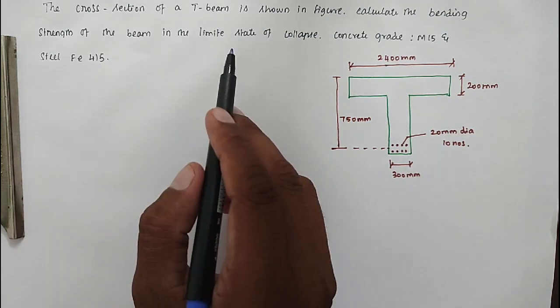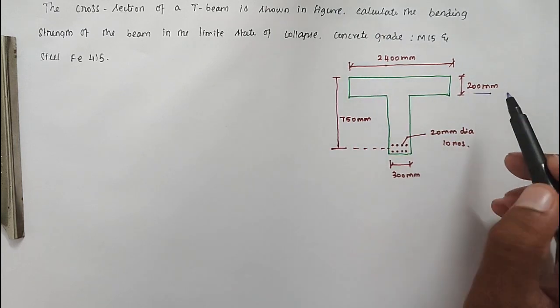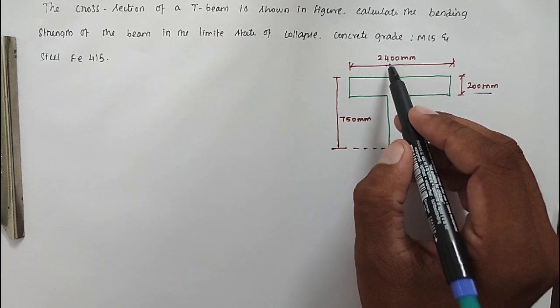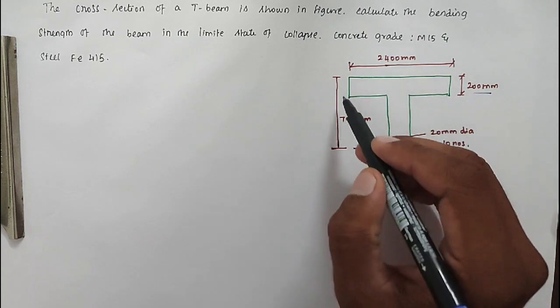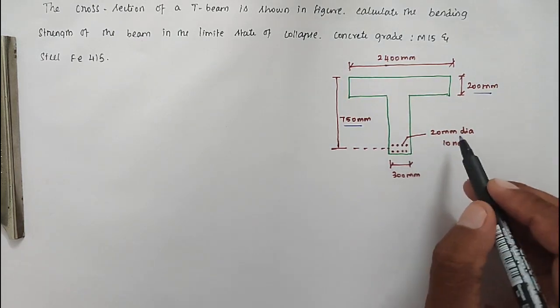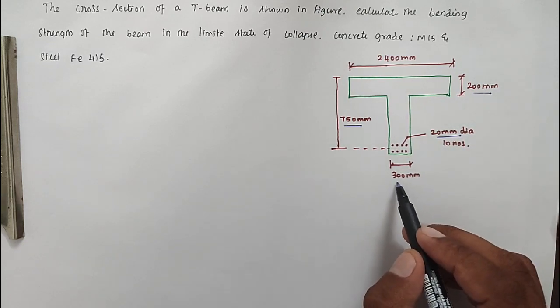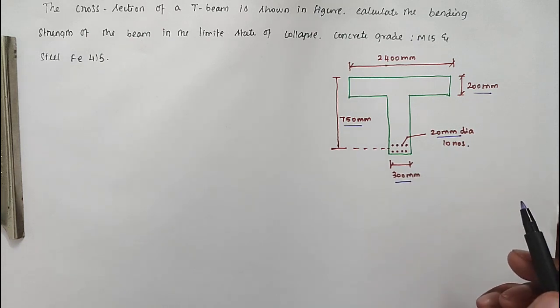So we have to find out the bending stress. The T-beam has thickness of flange 200mm, width 240mm, and depth 750mm. Then 10 numbers of 20mm diameter bars are provided with thickness 300mm.